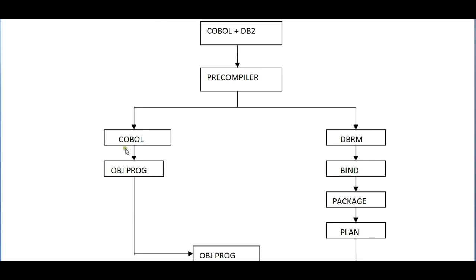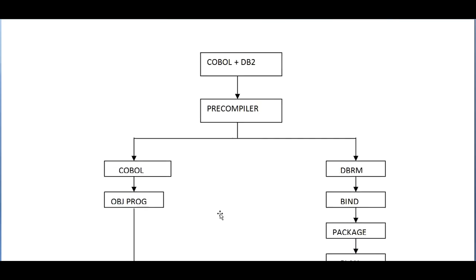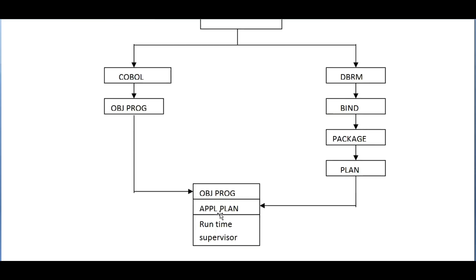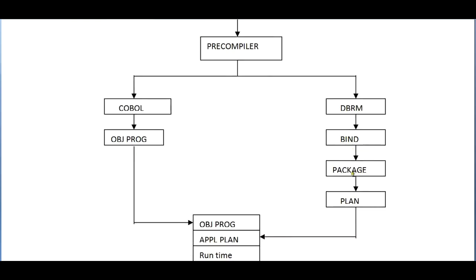From the pre-compiler we get another source code which contains all the code specific to COBOL statements only. It also creates a DBRM, which then goes to bind, and then to package and plan. The load module and the application plan are combined together to complete the COBOL DB2 pre-compilation. I'll now give a brief description of each block.